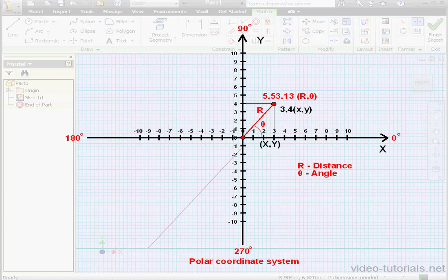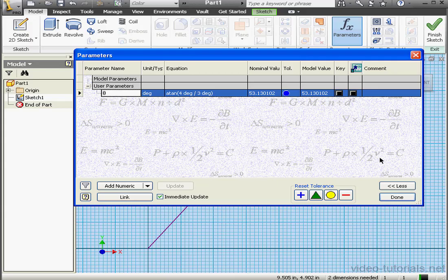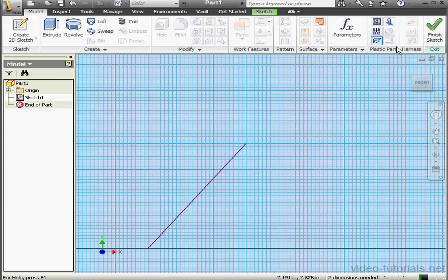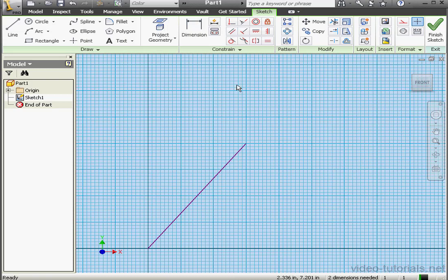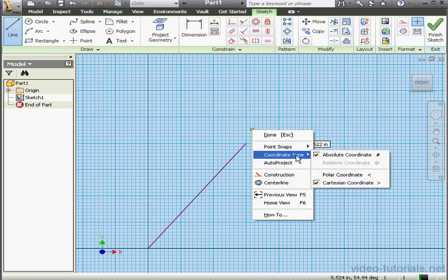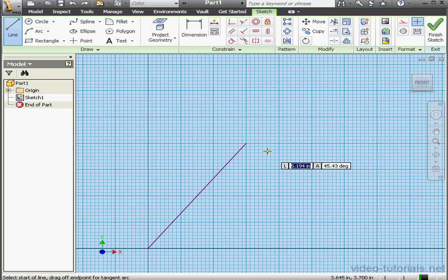Let's close my diagram and return to Inventor. Close the Parameters window and go to the Sketch tab. We're going to put our findings to the test. Let's activate the Line tool, right-click, select Coordinate type and select Polar. Now let's mouse over this point. As you see in the heads-up display, our point in the polar coordinate system is located at 5 and 53.13 degrees.